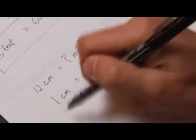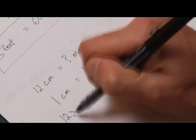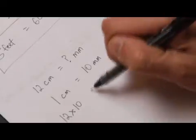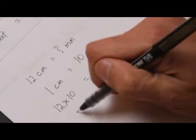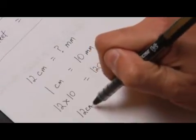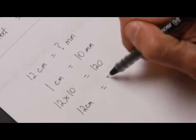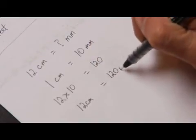So if we do 12 times 10, we get 120. So 12 centimeters equals 120 millimeters.